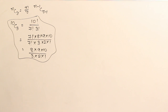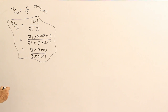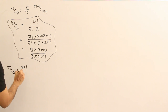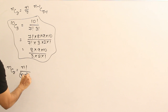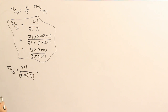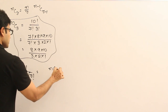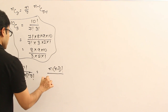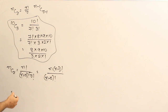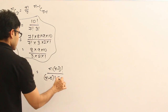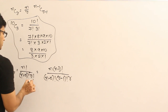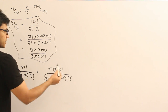Now let us see why this formula is important — NCR is equal to N by R into N minus 1 CR minus 1. First let us verify if it is really true. NCR is nothing but N factorial divided by N minus R factorial into R factorial. From the numerator I want to pull out N as common. From the denominator I want to pull out R, so I write R factorial as R minus 1 factorial into R.